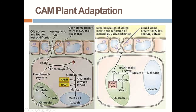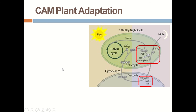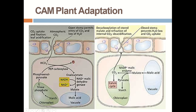To summarize CO2 dynamics in CAM plants in day and night conditions: at night, CO2 uptake and fixation goes on. Atmospheric CO2 enters through open stomata, PEP carboxylase converts PEP to oxaloacetate, oxaloacetate forms malate, and malate is converted into malic acid and stored. In the daytime, decarboxylation of stored malate and release of internal CO2 occurs.